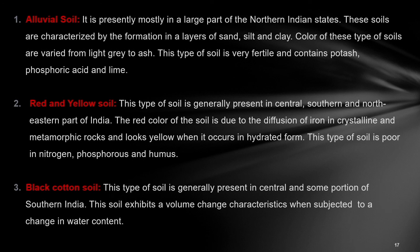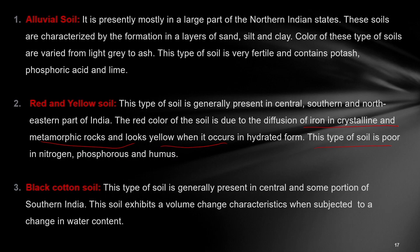Red and yellow soil is generally present in the central, southern, and northeast parts of India. It is characterized by a red color due to the diffusion of iron in crystalline and metamorphic rocks, and looks yellow when it occurs in hydrated form. This type of soil is very poor in nitrogen, phosphorus, and humus. Then comes black cotton soil — it looks black and exhibits volume change characteristics, meaning when it absorbs water the volume of the soil increases, and when the water evaporates the volume decreases. Because of this change in volume, the soil creates a lot of problems for structures above it.